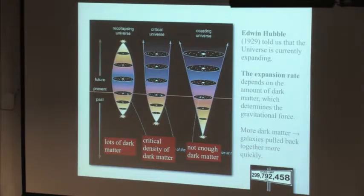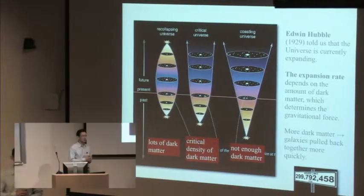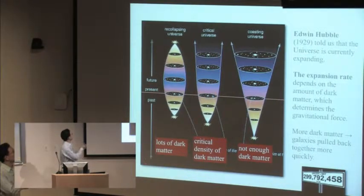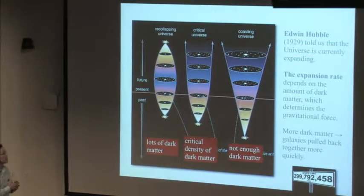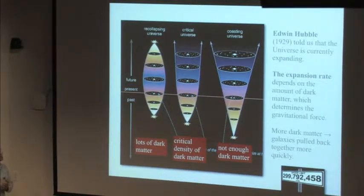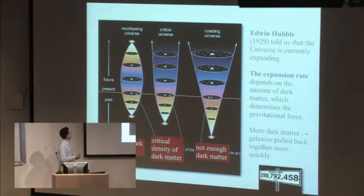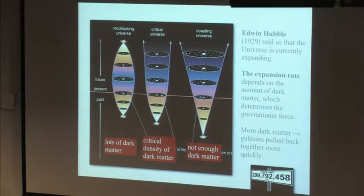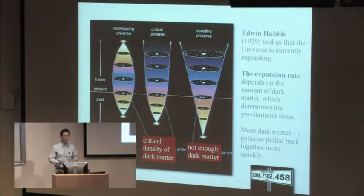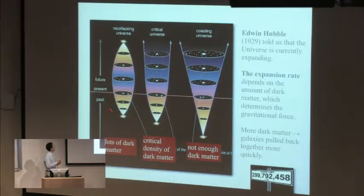So let me briefly describe what supernova cosmology is, what kinds of measurements we make, and how we use those measurements to understand dark energy. To first order, this is a very simple thing that we do. We try to measure the expansion history of the universe by looking at the past.